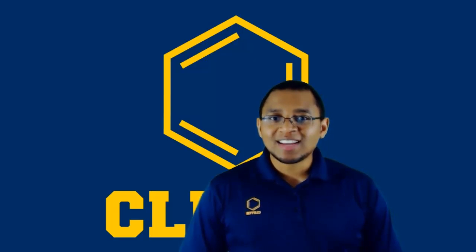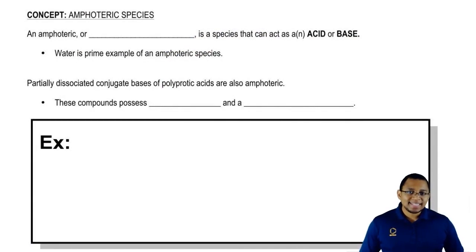Hey guys! In this new video, we're going to take a look at amphoteric species. We've been floating around this idea. We've been saying, for example, that water is an example of an amphoteric species. It can act as an acid in some equations but as a base in another. That's the whole idea of amphoteric species.